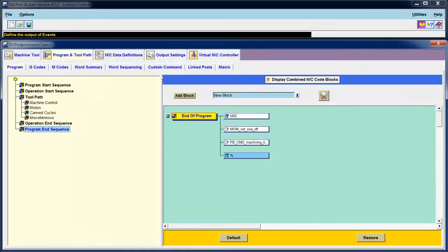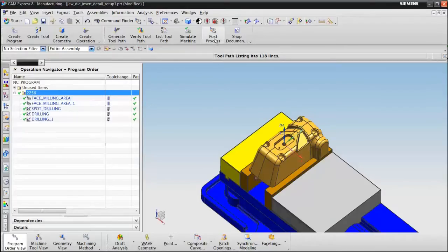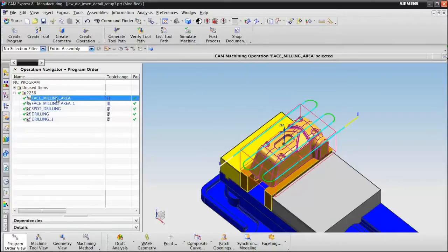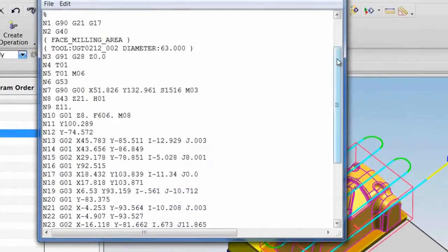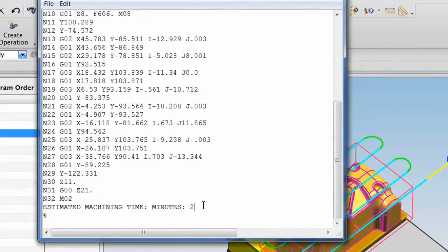We'll save this. Return to CAM Express. And let's post-process one single operation that should be less than an hour. Estimated machining time, two minutes. No mention of hours.